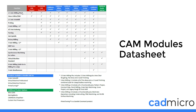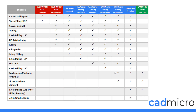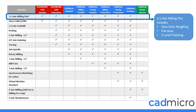With two and a half axis milling plus, you can see there's a little star beside it. Same with three axis milling level one — there's a little star, and all the stars are explained with the toolpaths at the bottom. On the next page we've got a breakdown of each of these. Two and a half axis milling plus is included in every single package and includes an area clearance roughing toolpath, a flat area toolpath, and a z-level finishing toolpath — three different three axis toolpaths available within SOLIDWORKS CAM standard, professional, and all CAMWorks packages.